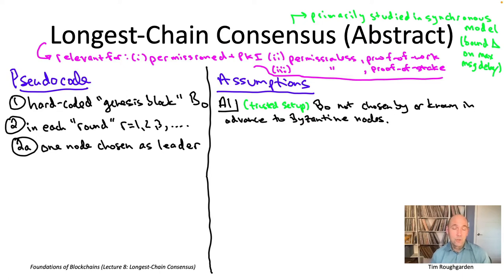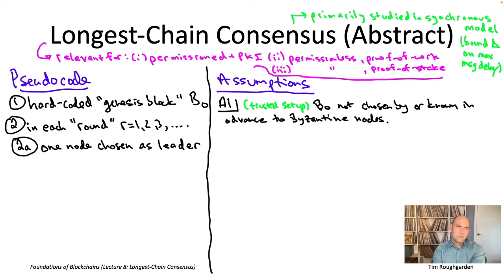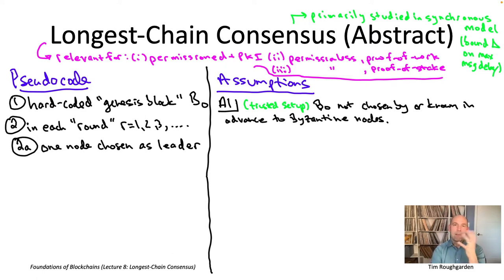In the permissioned setting, you could just use round robin — there's a global shared clock, everybody knows the nodes, so everyone knows which node is the current leader. In proof of stake, at a high level it's similar: each round corresponds to a time interval and one node is chosen randomly as a leader, but with probability proportional to their stake. Typically nodes have put some money in escrow, and if you own 10% of the total stake, you have a 1-in-10 chance of being selected.